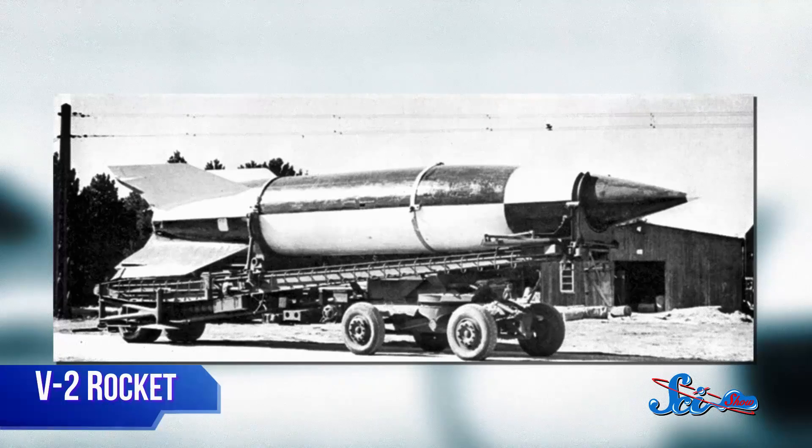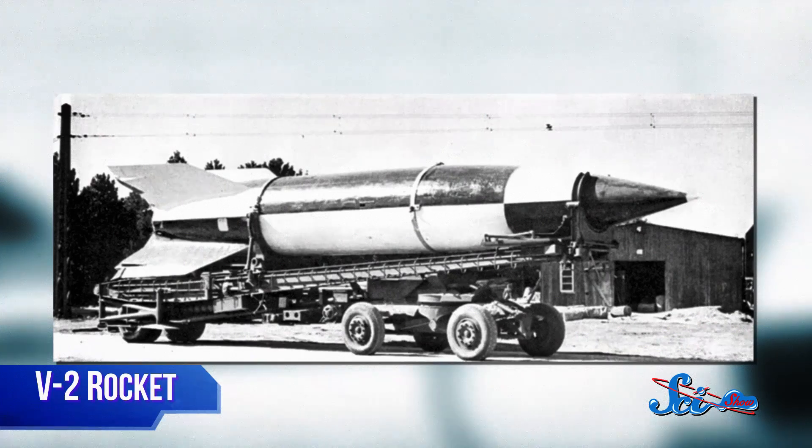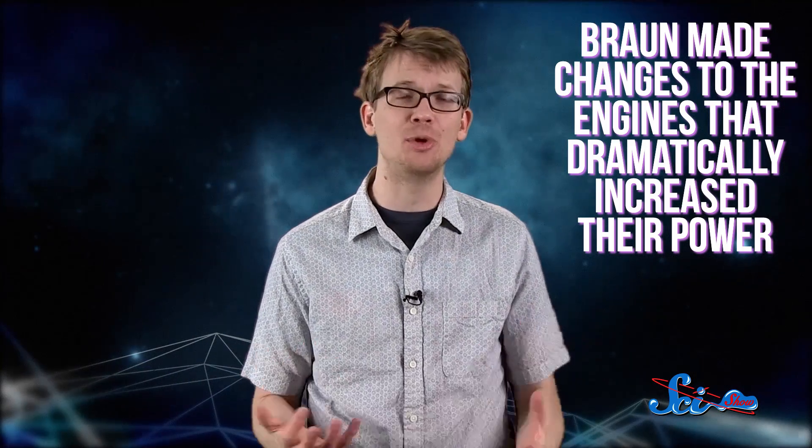Von Braun's team built a rocket called the A-4, later renamed the V-2, or Vengeance Weapon. The V-2 was essentially a larger version of the liquid-fueled rockets built by Goddard, though von Braun made changes to the engines that dramatically increased their power.